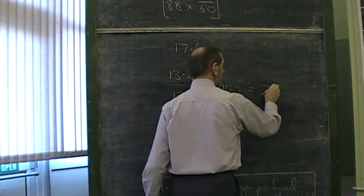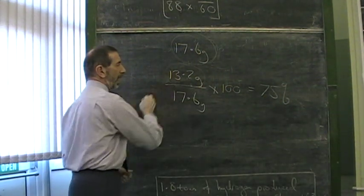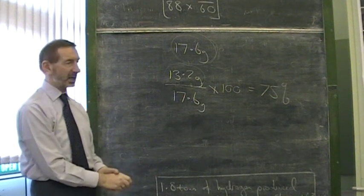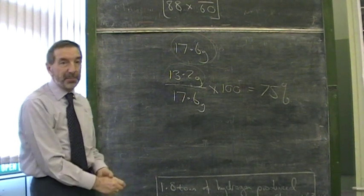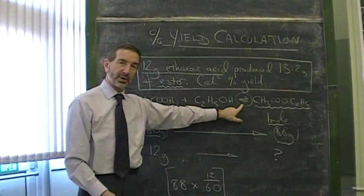And if we express that as a percentage, this one comes to 75%. In other words, 13.2 grams is only 75% of what we thought we would get. It's 75% successful. Why is it only 75% successful? Well, one of the reasons is it's a reversible reaction.